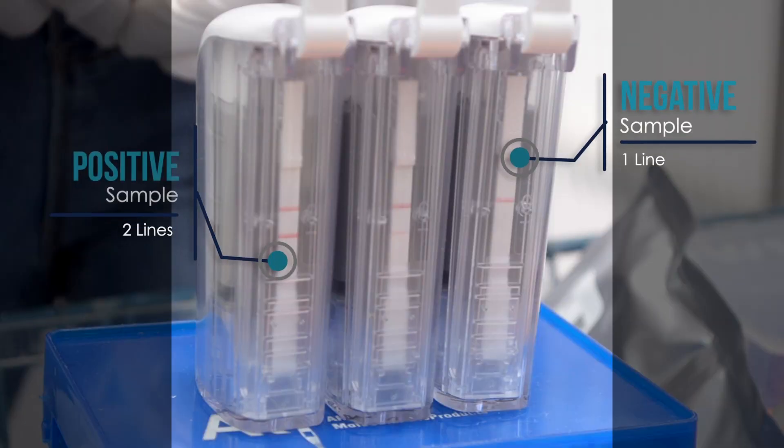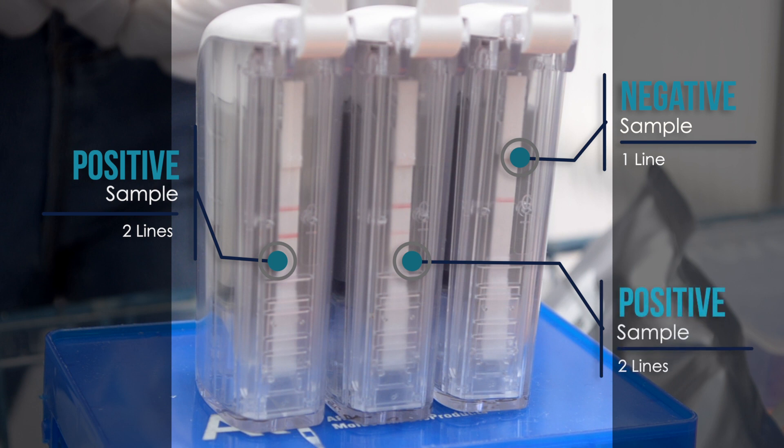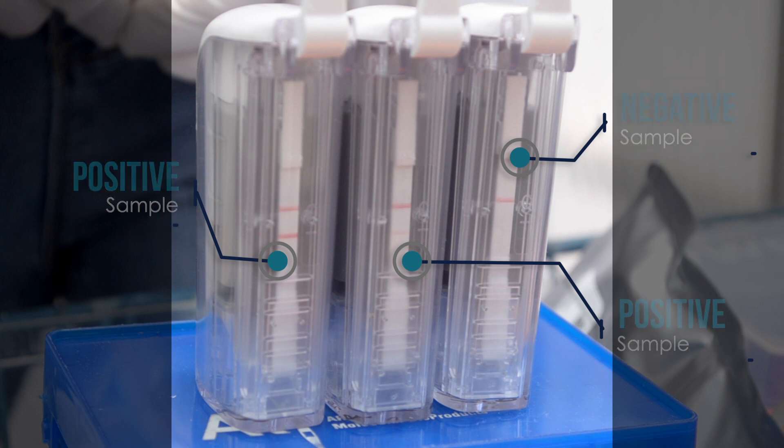One line is negative and two lines are positive. If you have two lines but one is much darker than the other one, you still have a positive result. If you have one line after 20 minutes, but a second line appears after a day or so, you still have a negative result.